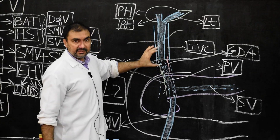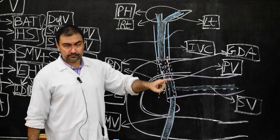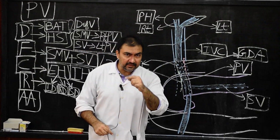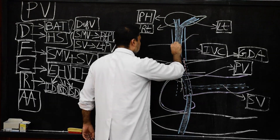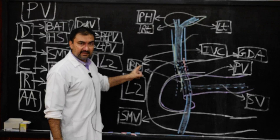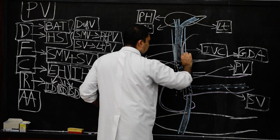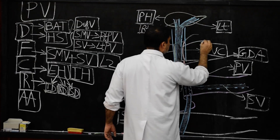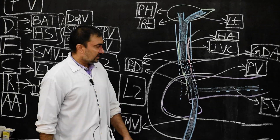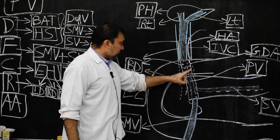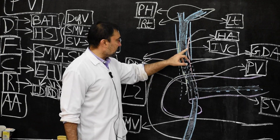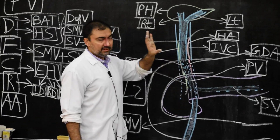In the supraduodenal segment: posteriorly is the inferior vena cava, anteriorly and on the right side is the bile duct, and anteriorly and on the left side is the common hepatic artery. Note that the gastroduodenal artery is a branch of the hepatic artery.